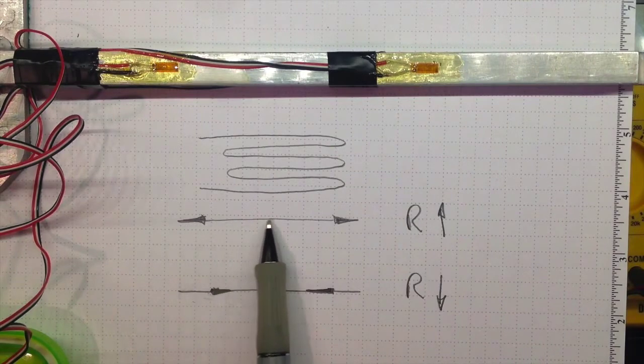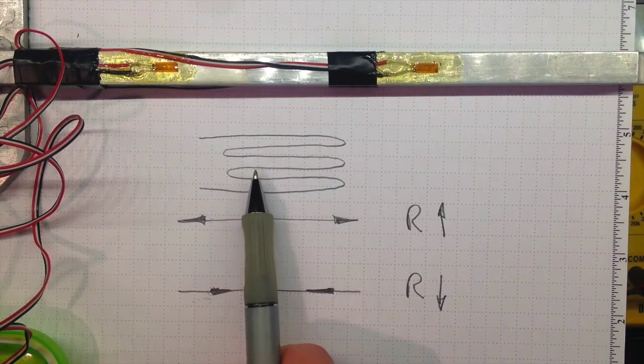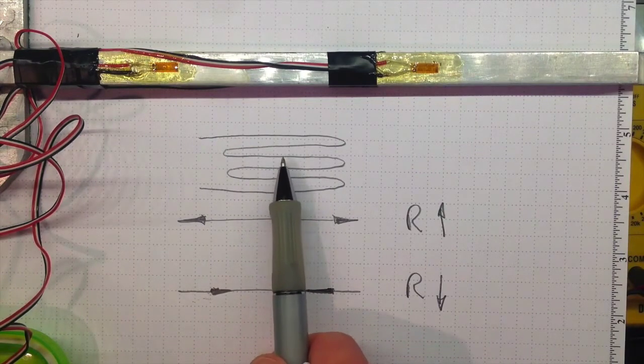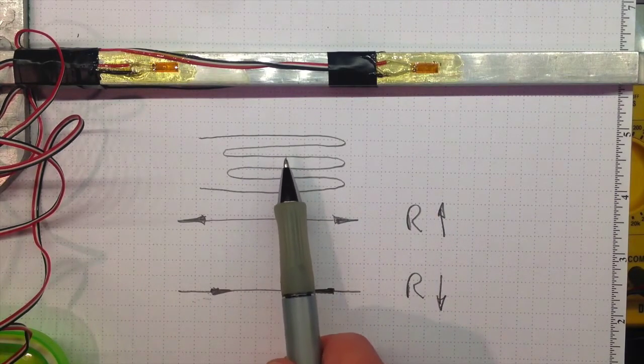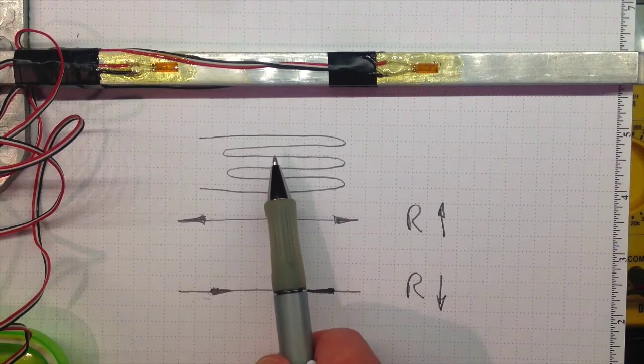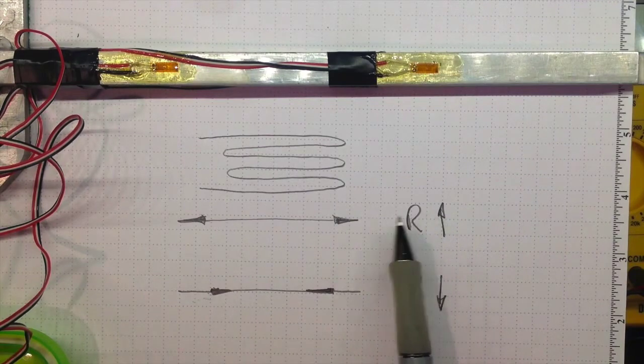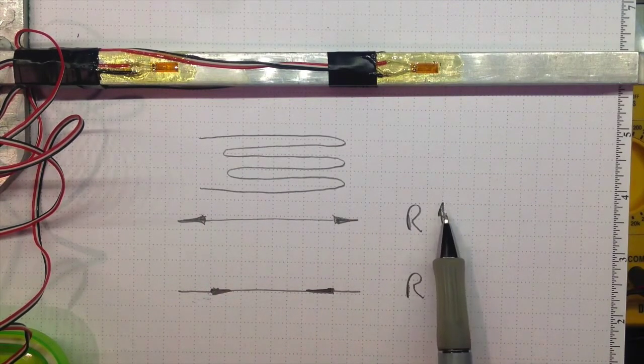Now when a strain gauge is stretched the wires get longer so the resistance goes up. Because of Poisson's ratio they also get narrower so the resistance goes up. And in addition because of the stressing of the matrix, the crystal matrix in the metal, the resistance also goes up. So anytime we stretch a strain gauge we see an increase in resistance.